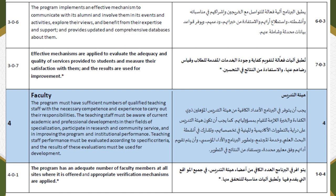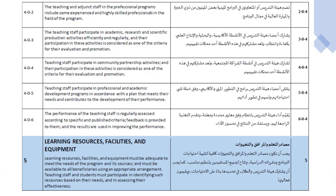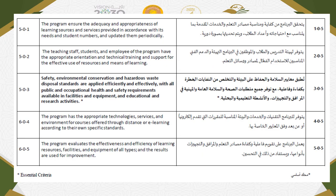The fourth standard is about faculty. For faculty, there are no essential criteria, but there are six criteria. For resources, there is only one essential criteria, which is about safety. Overall, with only 48 criteria and fewer essential criteria, the accreditation requirements become more straightforward and more flexible.